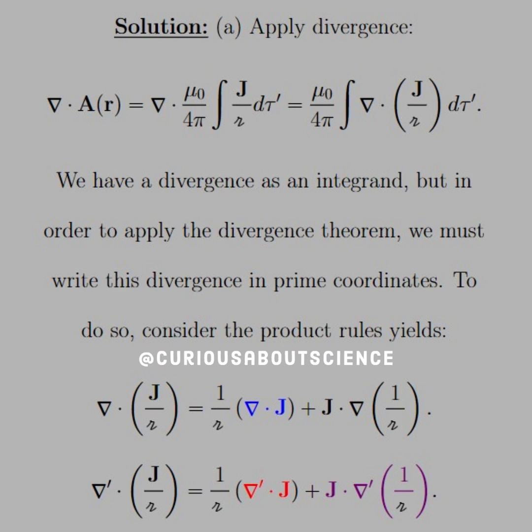and the del operator is in unprimed coordinates. So in order to apply the divergence theorem, we need to convert this into a prime del operator. And we can do that because the script r is a function of r and r prime, and so we can use the same setup and substitute in the prime coordinate system.